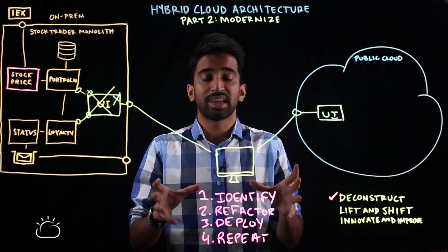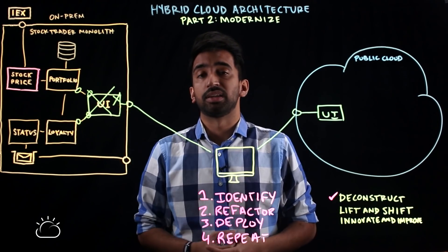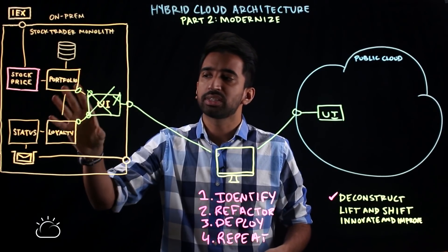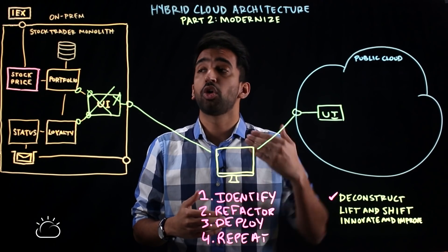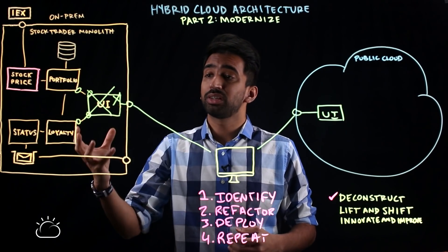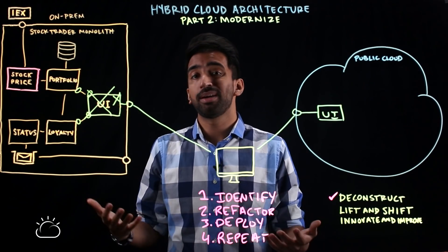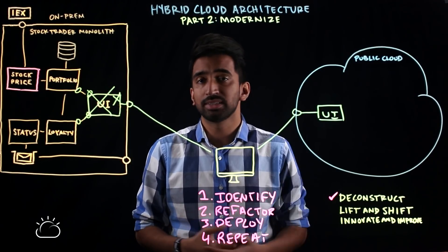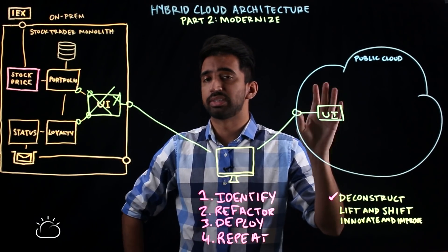But let's say the application continues to grow and we have a new bottleneck: the stock price service. With many portfolios and users, we're hitting the Investor's Exchange so many times that we need to scale that service out. Unfortunately, with a monolithic architecture, if we want to scale stock price out, we have to scale everything out. On-prem, we don't have enough resources to do that, so users are getting bad experiences again as the user base grows, and we need to move stock price to take advantage of public cloud scalability.